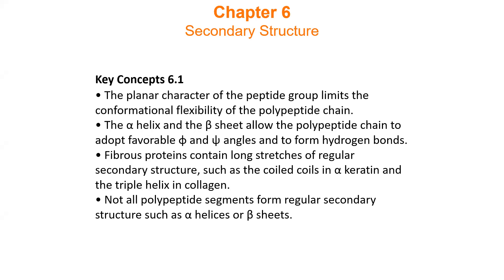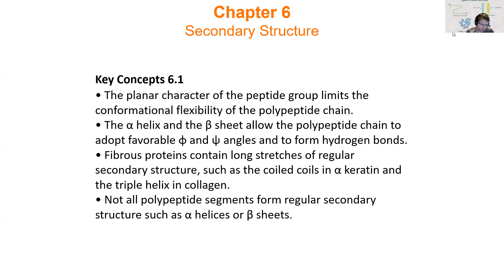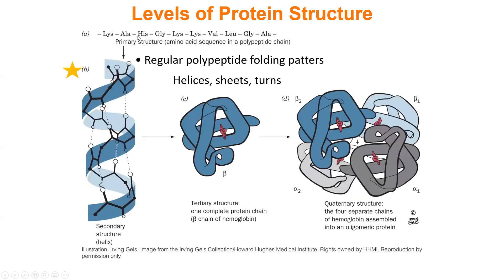We are now going to get into Chapter Six, which is secondary structure. My background actually shows the different types of protein structure: primary structure, secondary structure, and behind my head tertiary and quaternary. Secondary structure is the backbone conformation of a local area of the protein — it's what the amino acid backbones are doing and what kind of structure the backbone is making. Primary structure is just the order of amino acids; secondary structure is localized backbone conformation.